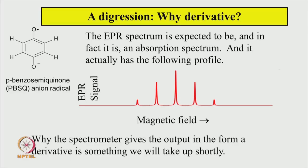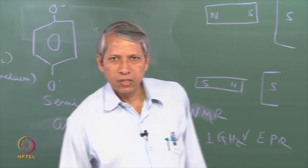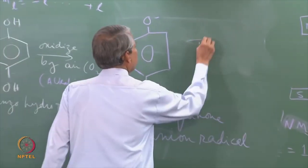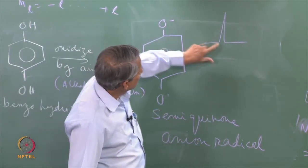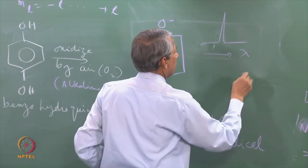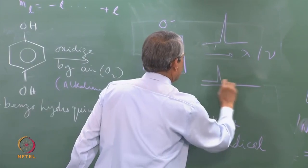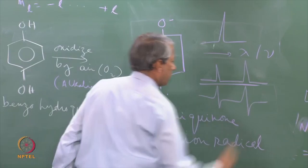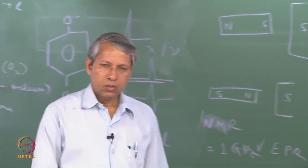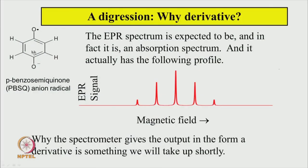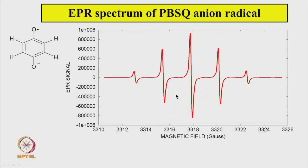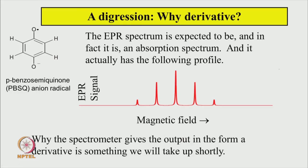Before going to another example, here is a small digression. The EPR spectrum is recorded in the form of a derivative, whereas in conventional spectroscopy the absorption spectrum looks like a peak. The EPR spectrometer records the derivative of the absorption line — what we see as 5 derivative lines corresponds to 5 absorption lines internally. Why the spectrometer gives output in the form of a derivative is something we will take up shortly.